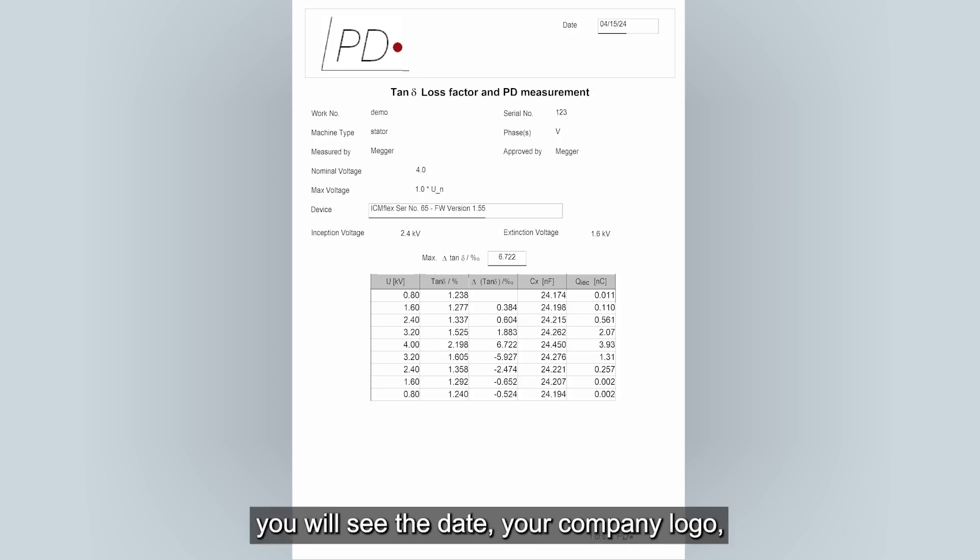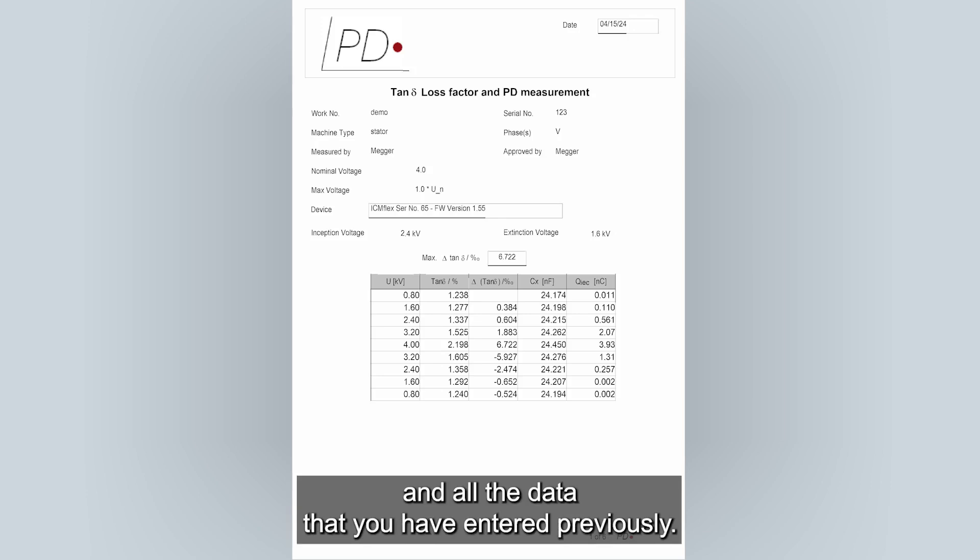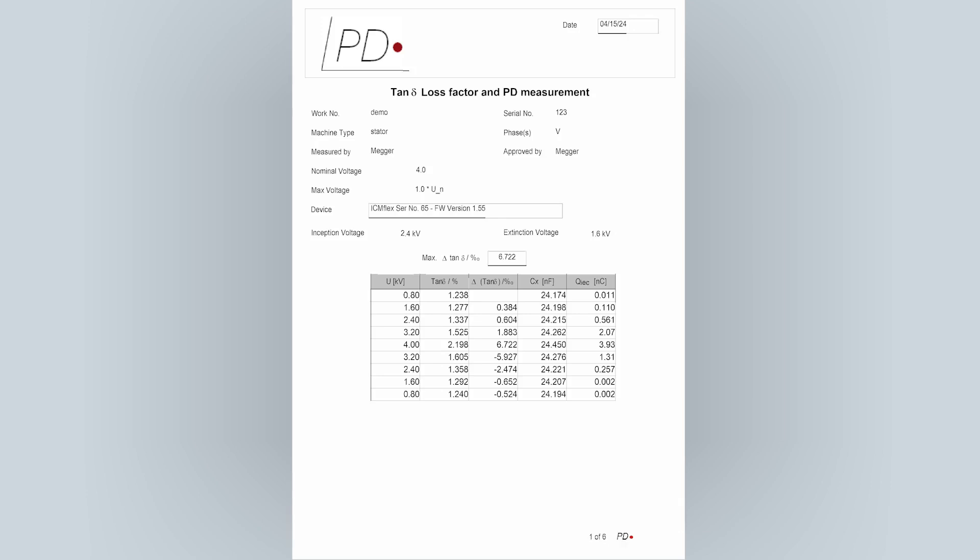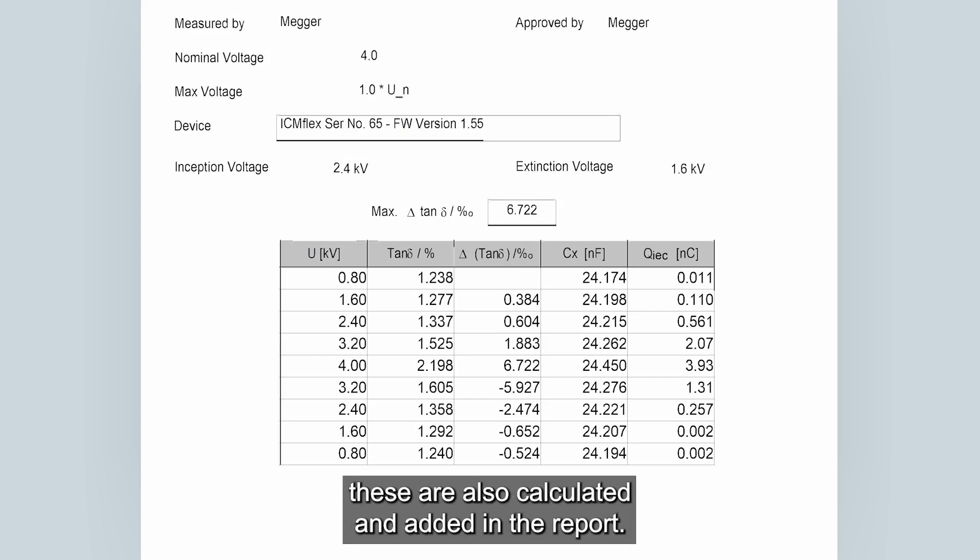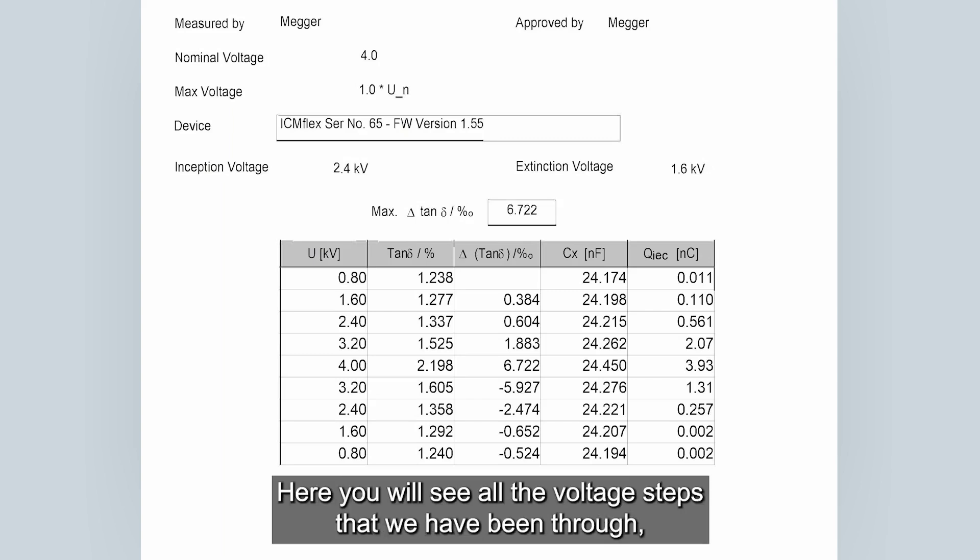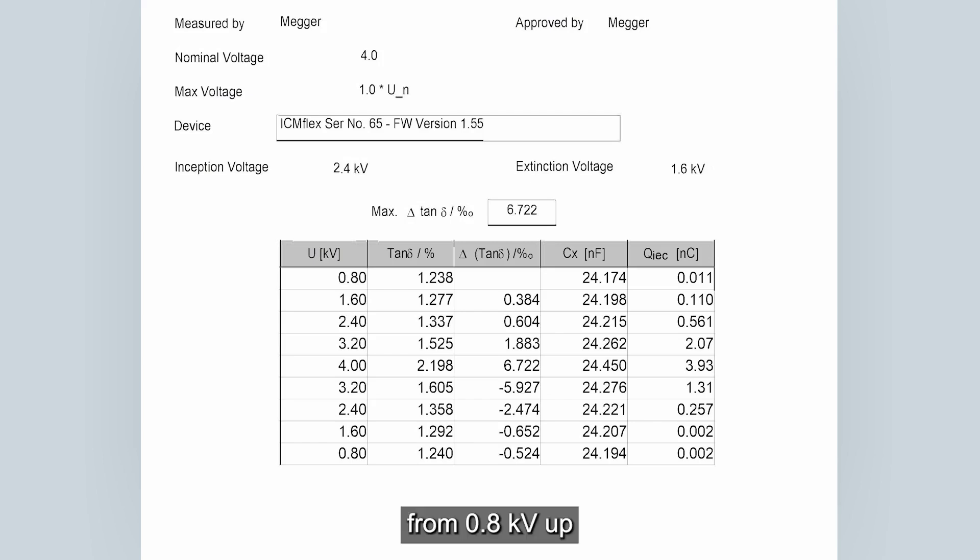The first page of the report you will see the date, your company logo and all the data that you have entered previously. Since we have chosen the options inception and extinction voltage, these are also calculated and added in the report. Here you will see all the voltage steps that we have been through. From 0.8 kV up to 4 kV and then down to 0.8 kV up and down.